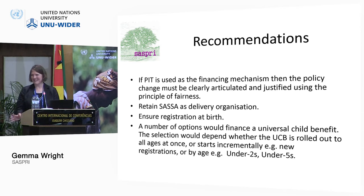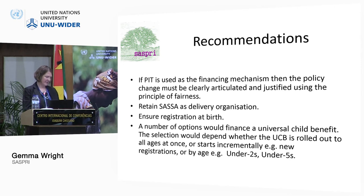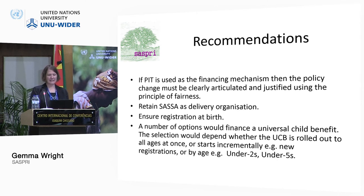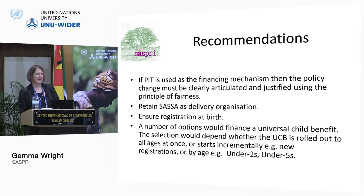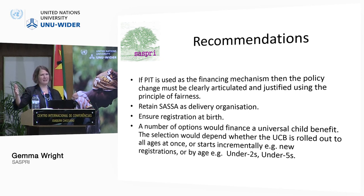To conclude, there are many ways in which income can be raised to fund a universal child benefit. If it is to be personal income tax in context, the financing mechanisms need to be clearly articulated and justified using the principle of fairness, and there would need to be extensive consultations. We could retain DSD as the delivery organisation, as they are already well connected with the whole population, but we need to continue pushing for registration at birth. There are a number of options potentially available that could accomplish this — it would depend enormously on when it starts and how it is done, but it can be done.